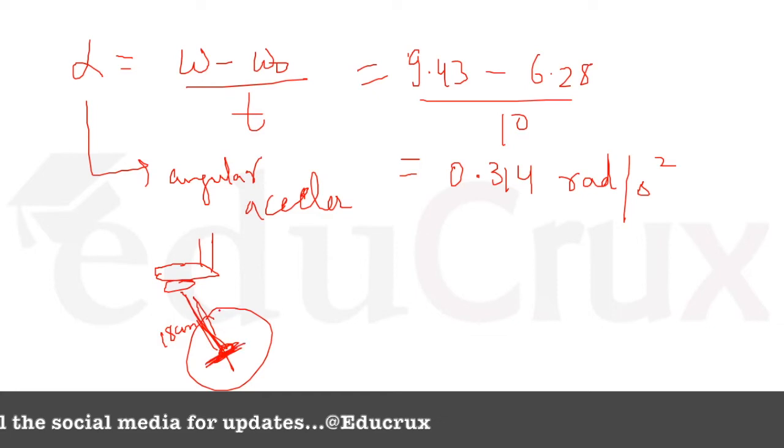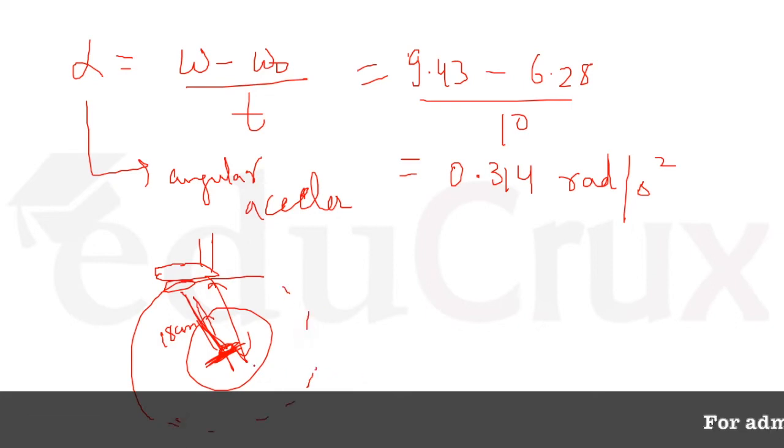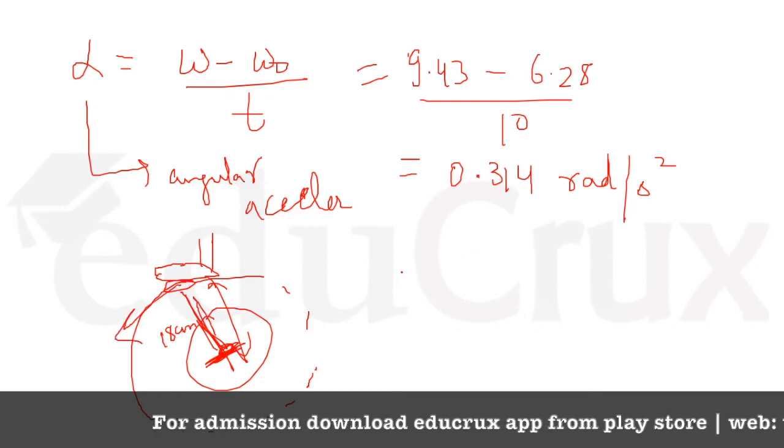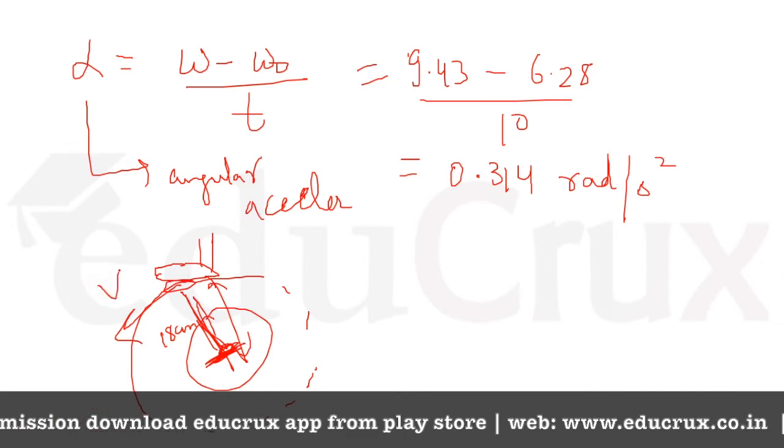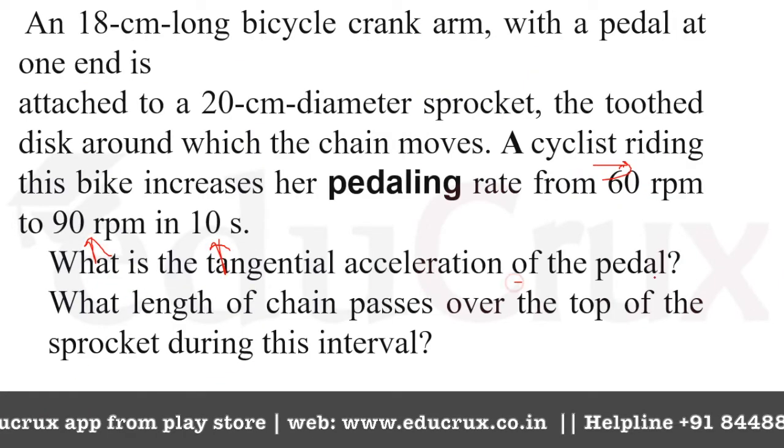Now, from the center, when we are moving the pedal, this thing goes like this. So this thing goes like rotation motion. The pedal, when we push on the pedal, this is V. So we need to find this, we need to find tangential acceleration of the pedal.